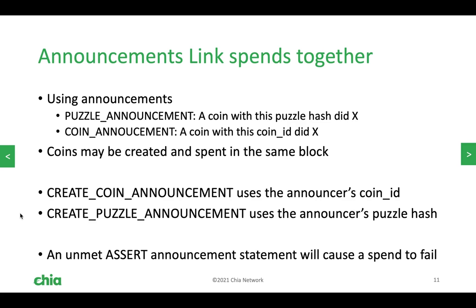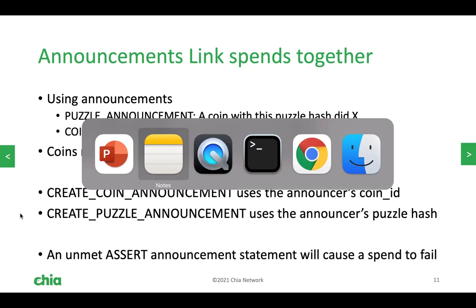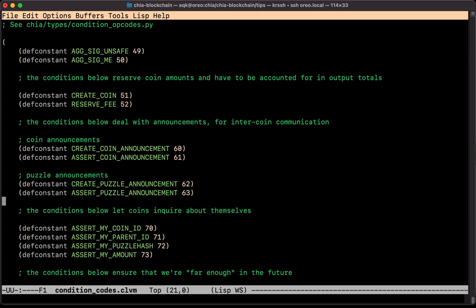A wallet can remember spends that have happened in the past, but for the CLVM code being run in your coin in that block, it can only see announcements that are happening right then. That means to propagate certain historical information using announcements, we have to reach into our coin, pull that information out, and put it into an announcement if we want another coin being spent in that same block to see it.